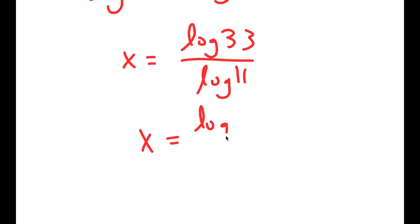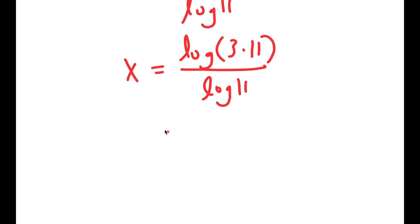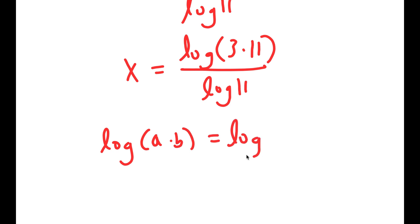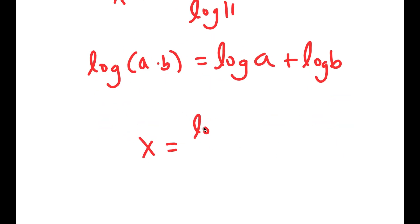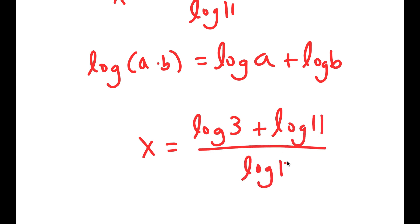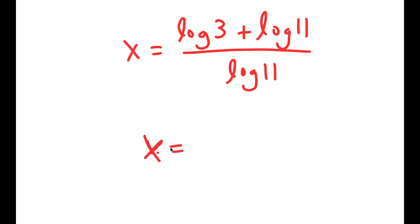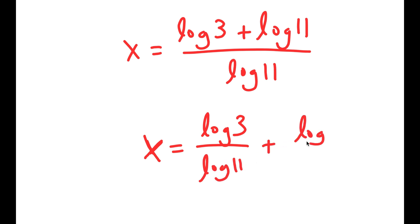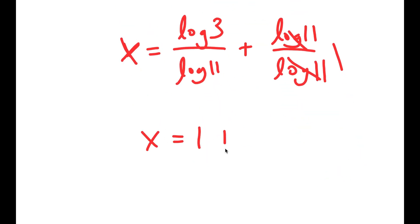And this is equal to log of 3 times 11 over log 11. Now if I have something in the form log a times b, this is equal to log a plus log b. So log of 3 times 11 is equal to log 3 plus log 11 over log 11. This simplifies to log 3 over log 11 plus log 11 over log 11. These two cancel out to get 1, so I get x is equal to 1 plus log 3 over log 11.